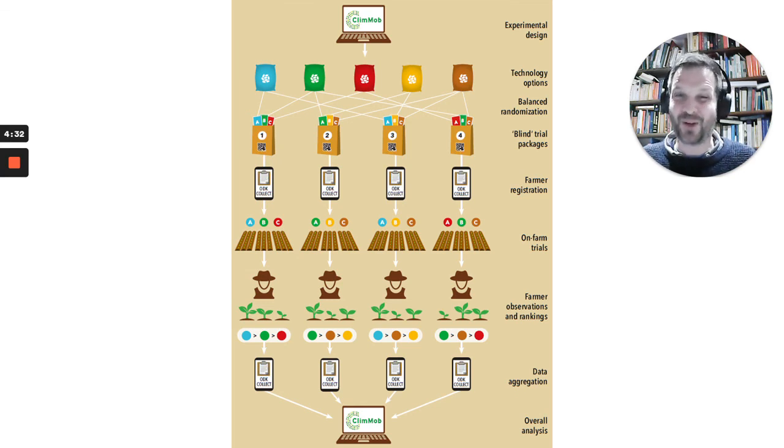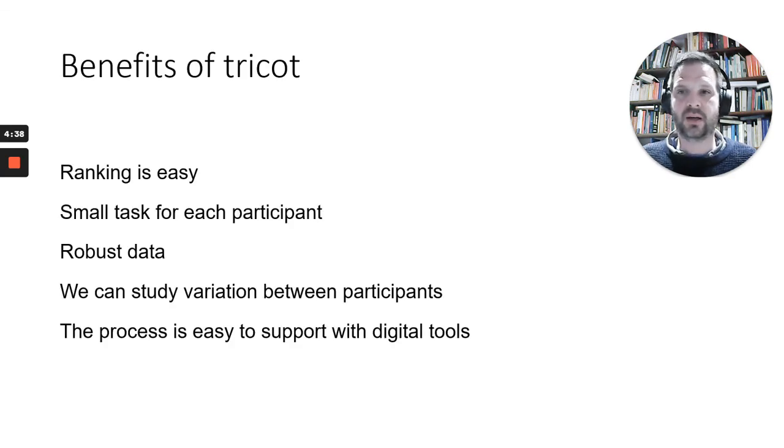But it's really an interesting way of organizing trials because each of the farmers do only a very simple task. So these are the benefits of the approach. We generate very robust data. And also we can study variation between the participants. So is there a difference between men and women, for example. And also this is the process that we can support with digital tools. And that makes it part of the tricot approach. Thank you.